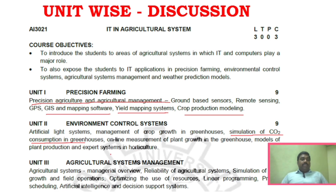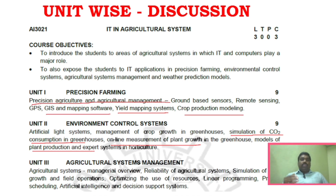In Unit 2, we also cover online measurement of plant growth and models of plant production. For Unit 3, the key areas include linear programming and project scheduling, which are very important, as well as artificial intelligence and decision support systems.